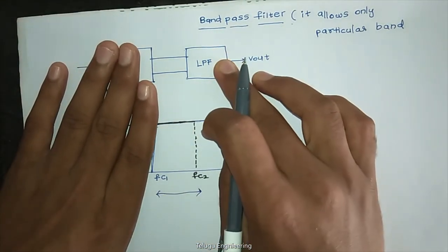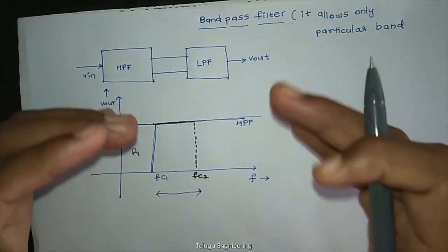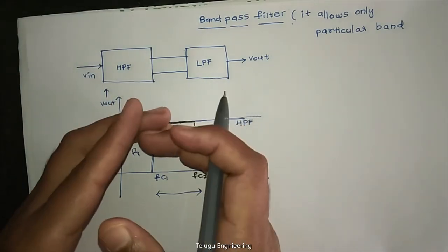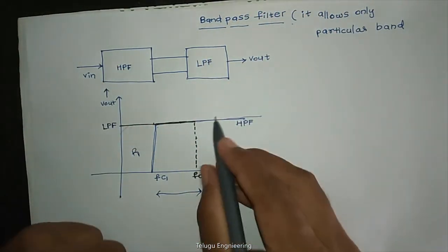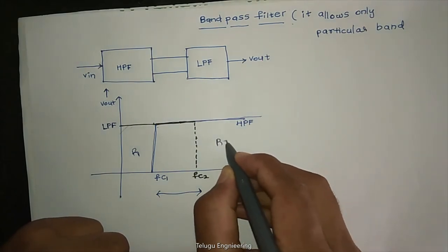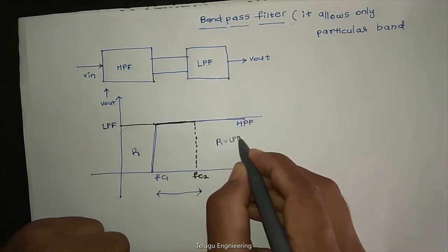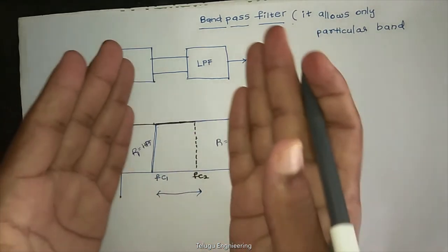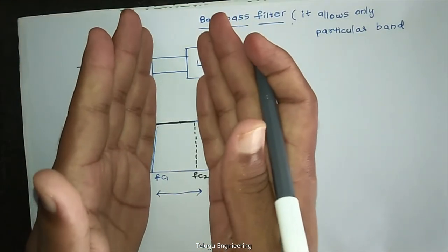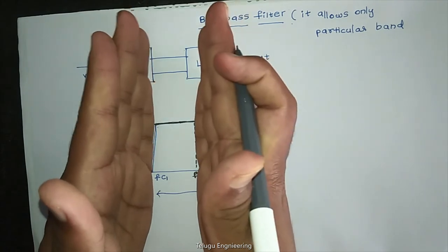So low pass filter will only allow low frequencies and reject the high signals. The very high frequencies are rejected by low pass filter, and the low frequencies are rejected by high pass filter. So the common band that we get as output voltage is our desired band.